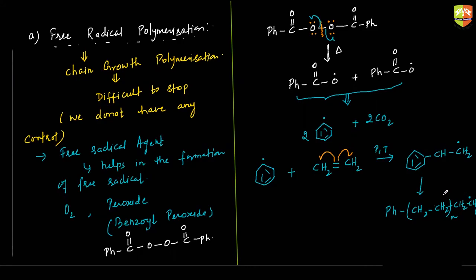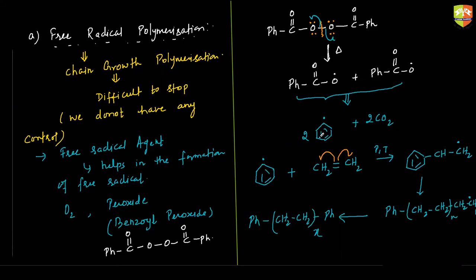Finally, all these radicals club together and form the long chain polymer — this last step is chain termination. From chain propagation to termination, the Ph groups go out and we get the long chain compound. As you can see, free radicals are involved, so the structure of the polymer is very complex with no proper ordered arrangement, because the intermediate is free radical, which is highly reactive and we have no control over such a reaction.